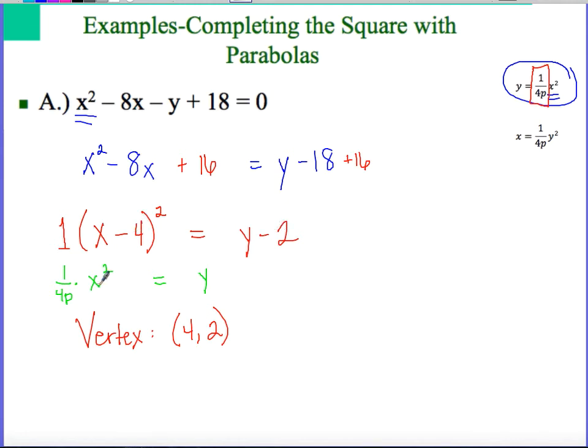This would mean 1/(4p) × x² is equal to the y value. We had our adjustments because our vertex wasn't at (0, 0), it's at (4, 2). And then the 1 is what's going to help us figure out the p value. 1 = 1/(4p), so 4p = 1, or in other words, p = 1/4.